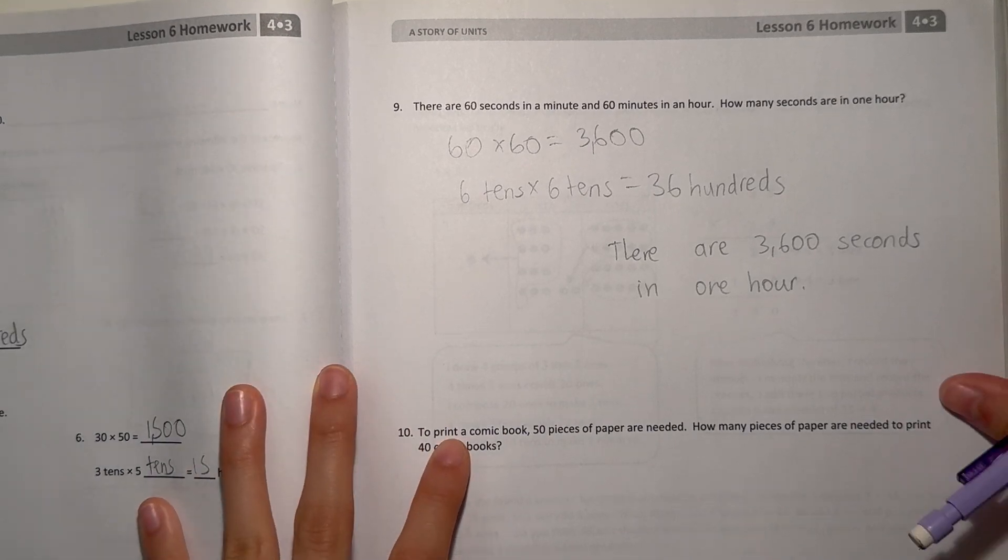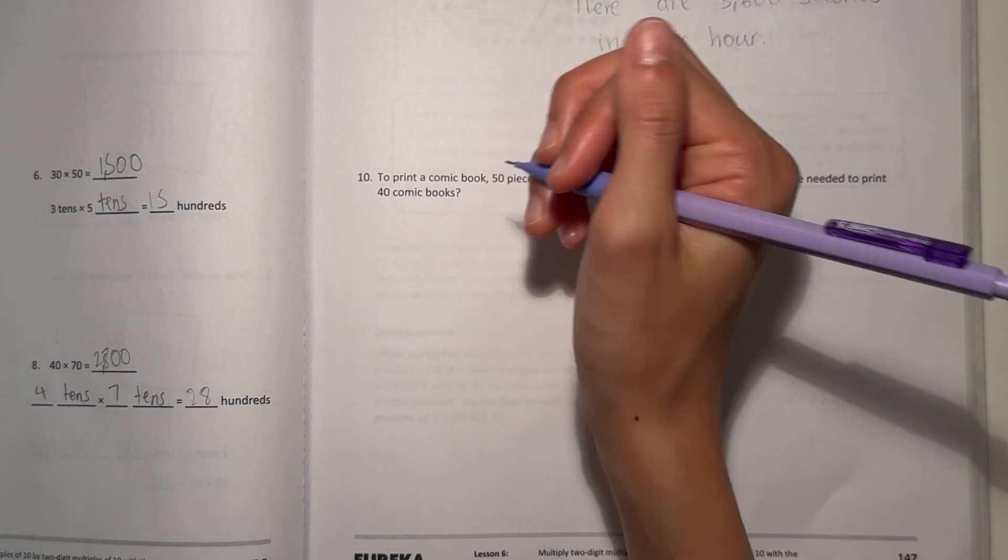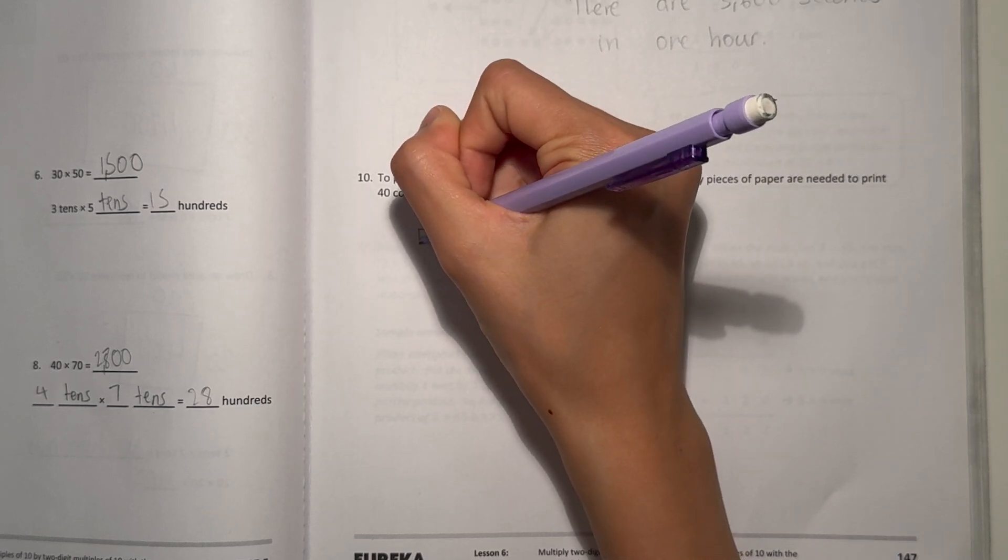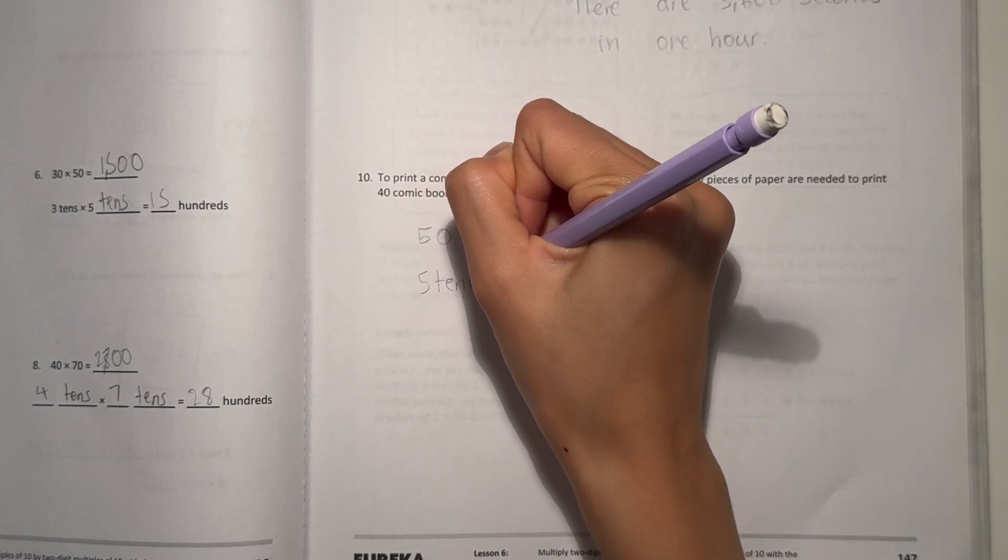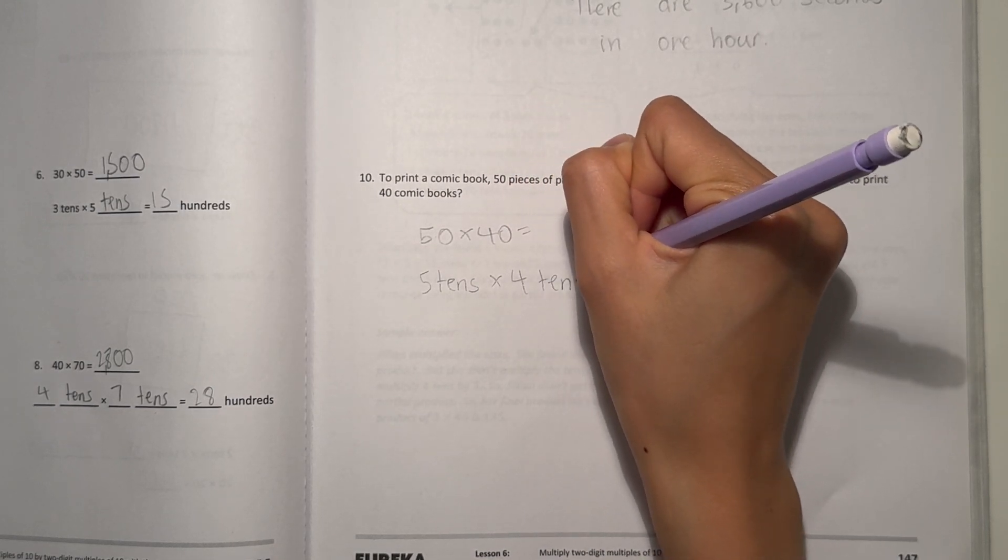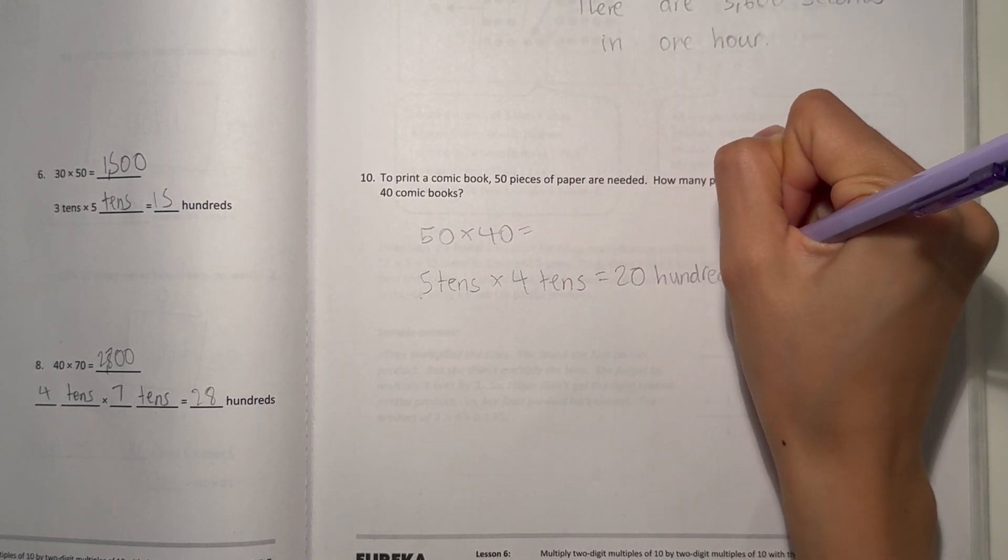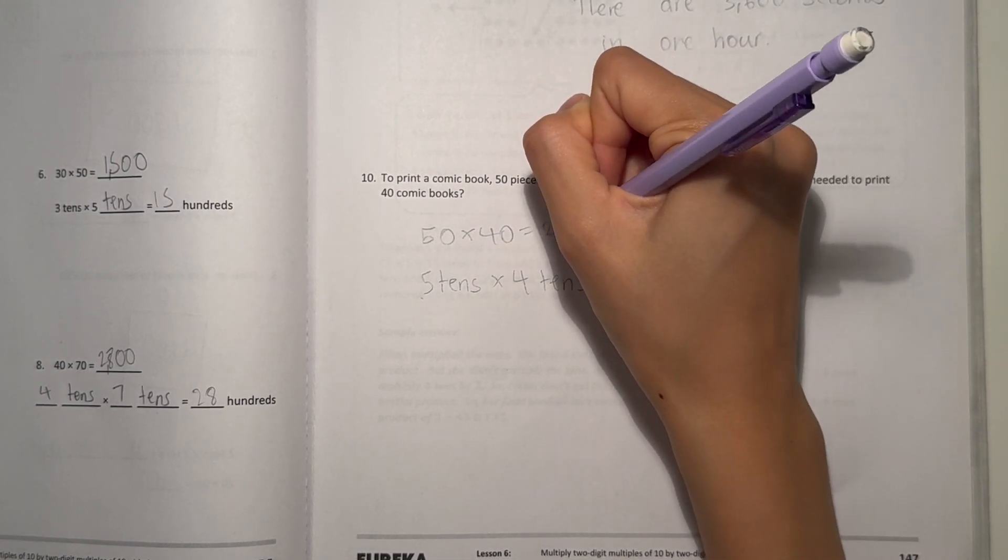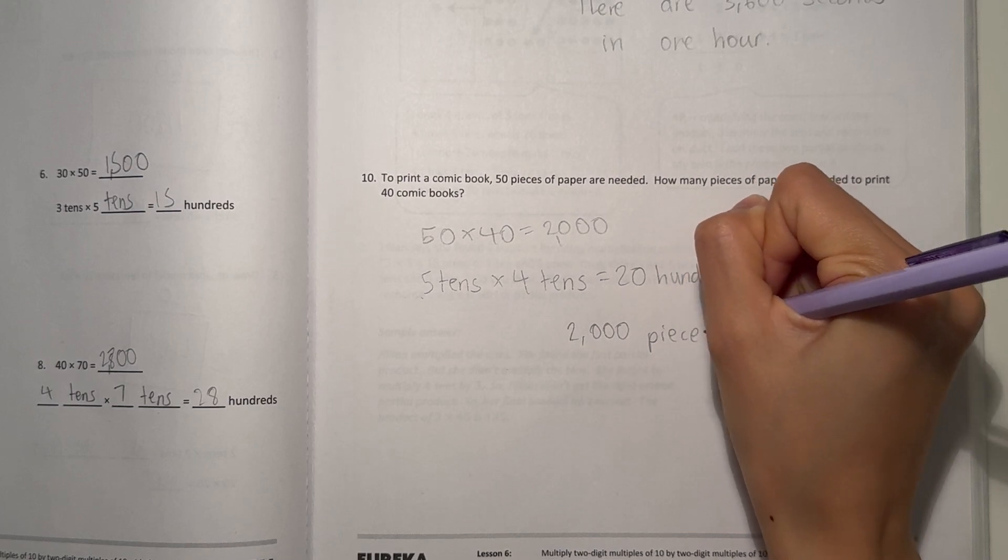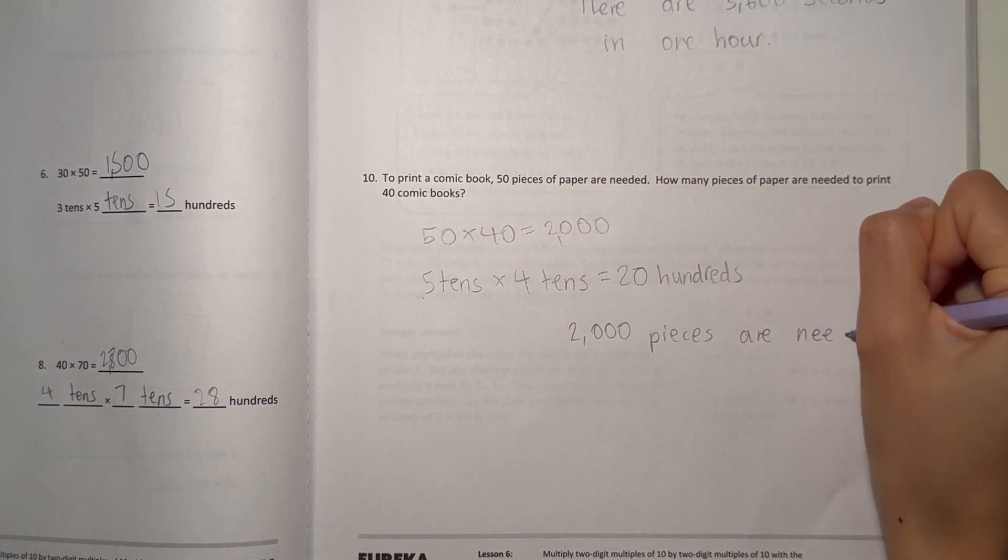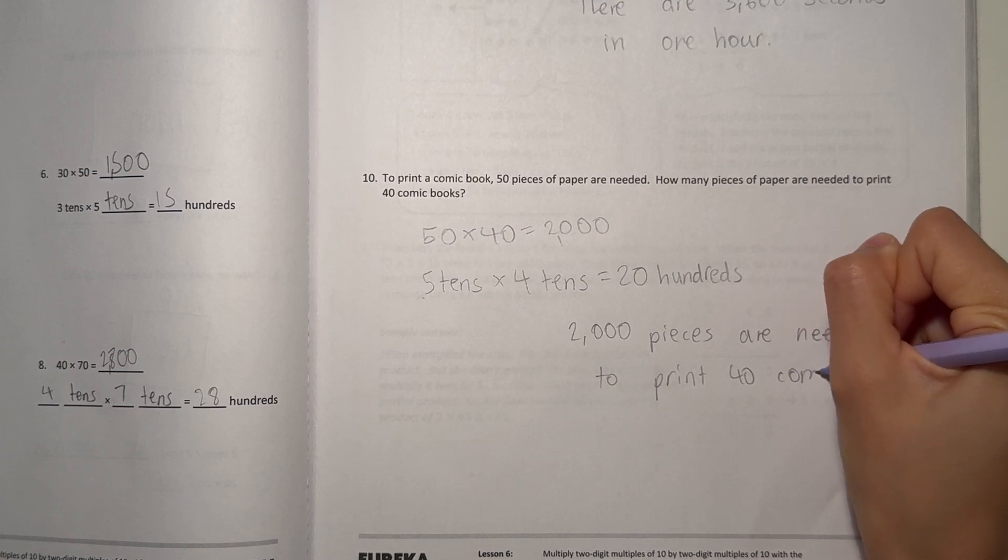Number 10. To print a comic book, 50 pieces of paper are needed. How many pieces of paper are needed to print 40 comic books? So 50 in each comic book, and there's 40. So 50 times 40, 5 tens times 4 tens. 5 times 4 is 20, 10 times 10 is hundreds. That's 20 hundreds, which is the same as 2,000. So that means 2,000 pieces are needed to print 40 comic books.